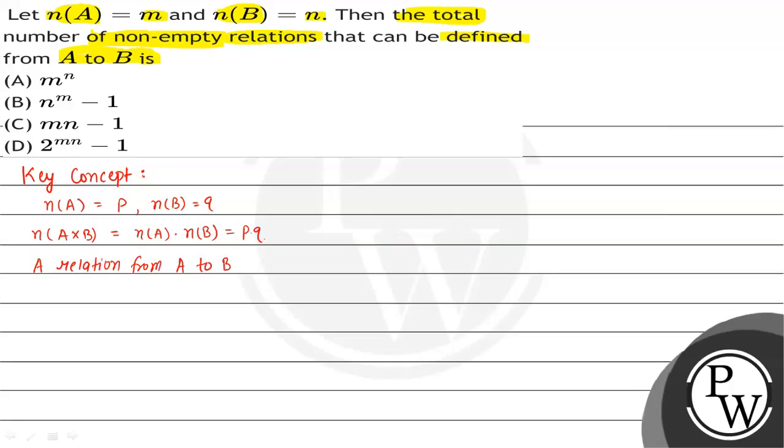Now applying this concept to our problem: given n(A) = m and n(B) = n, the number of elements in A×B equals m × n.